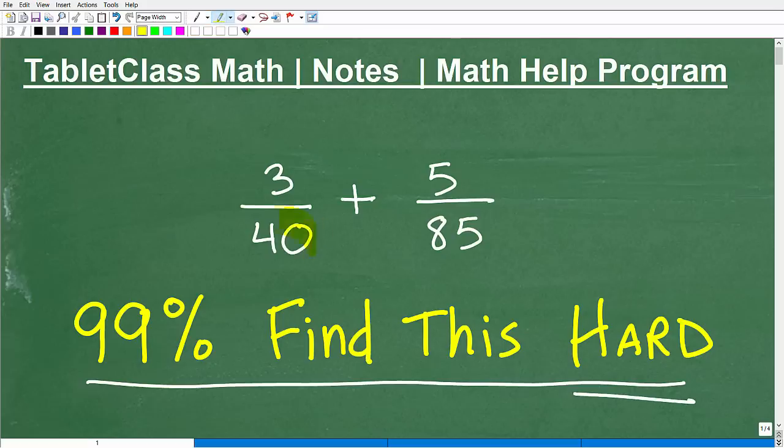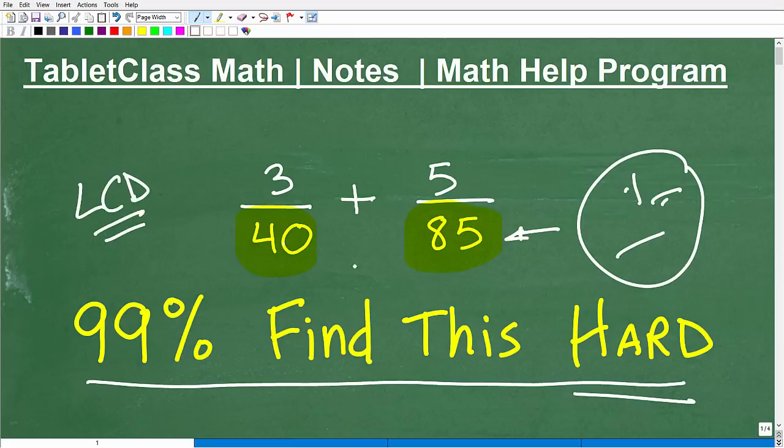Well, they're going to find it difficult because they're looking at these denominators and thinking to themselves, first of all, they're not happy they're dealing with fractions. They're like, fractions? I don't like fractions. And then second of all, I'm looking at these denominators and I'm going to have to find the LCD. And I'm not quite sure how to do that. So how do I find the LCD?